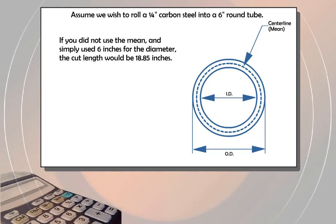If you did not use the mean and simply used 6 inches for the diameter, the cut length would be 18.85 inches. 6 times 3.1416 equals 18.85.